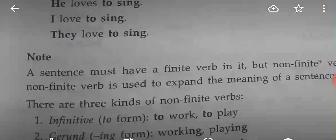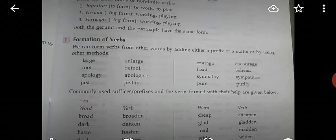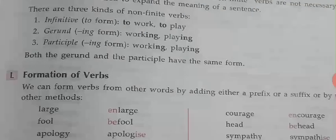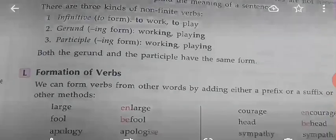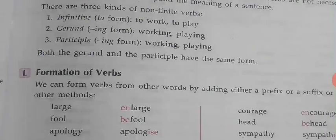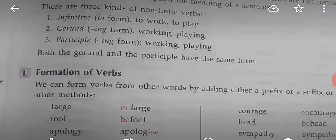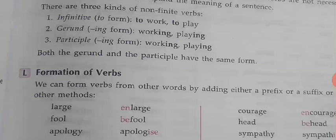There are three kinds of non-finite verbs: first, the infinitive — the 'to' form, such as 'to work', 'to play'. Second, the gerund — the '-ing' form used as a noun, such as 'working', 'playing', used as the subject, like 'Swimming is a good exercise'. Third, the participle — also the '-ing' form, like 'working' and 'playing', but used differently. Note that the gerund and participle have the same form.